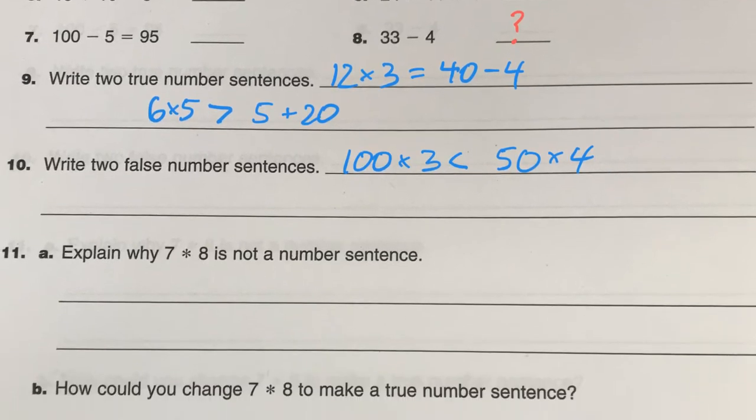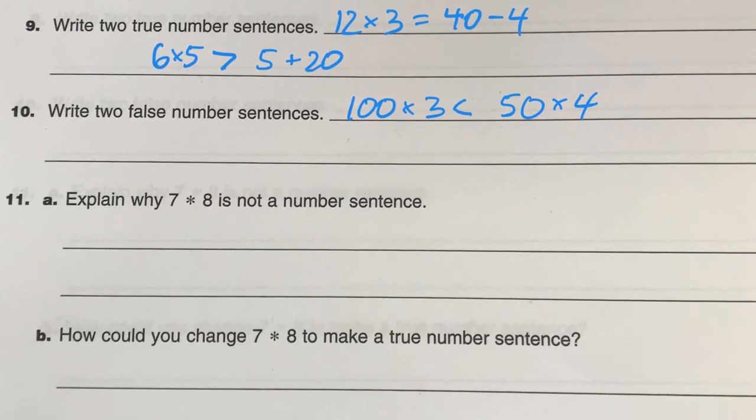Why is 7 times 8 not a number sentence? Well, because it can't be true or false. There's no equal sign, and there's not a product there. So those are all reasons why that is not a number sentence.